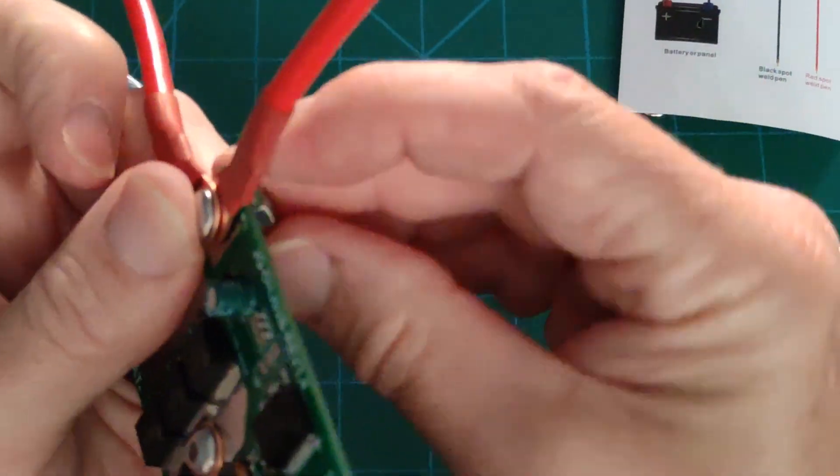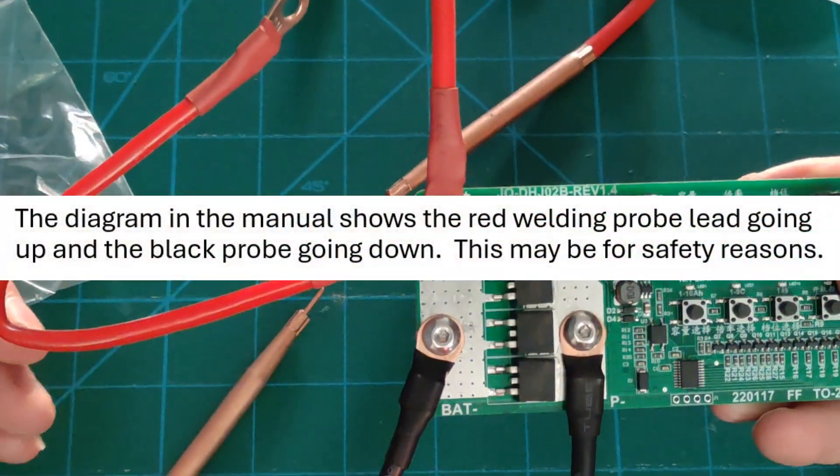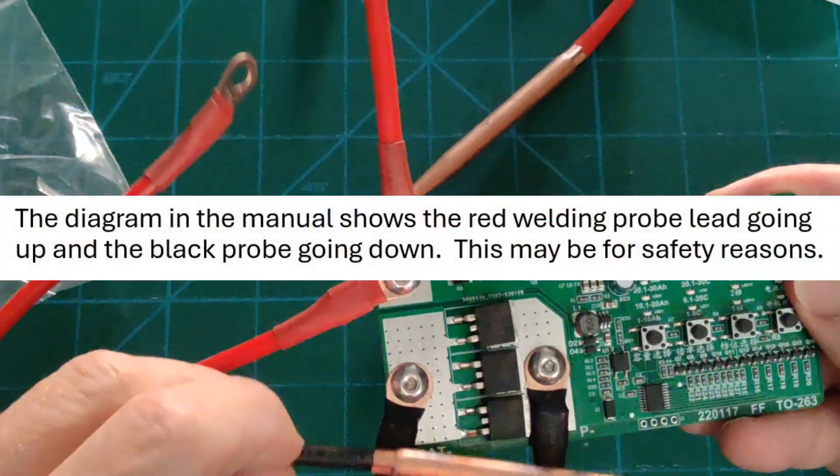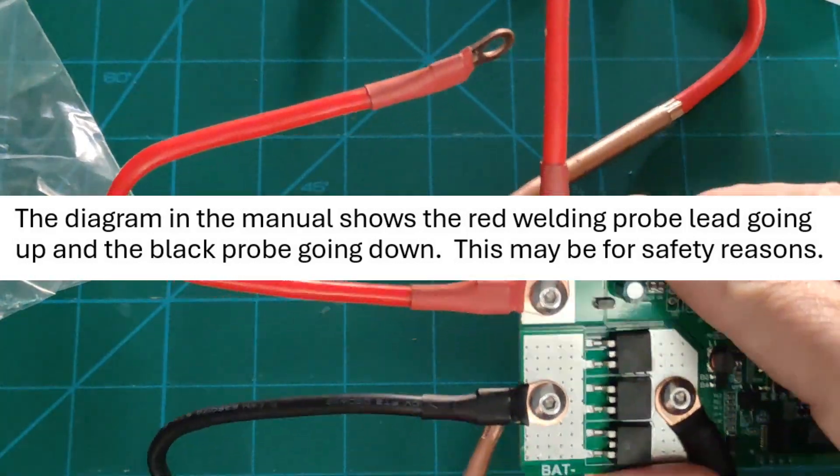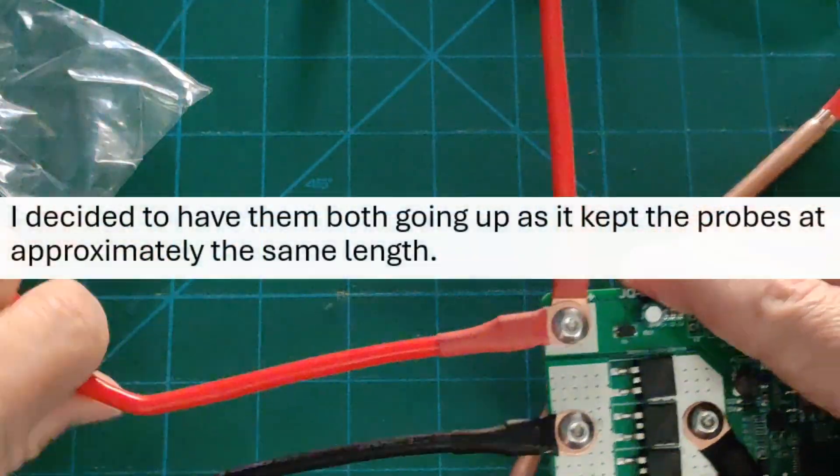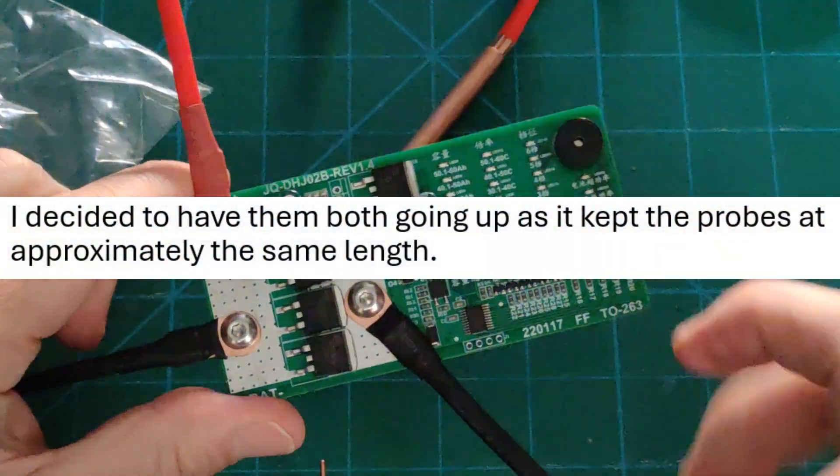Now what's quite interesting here is the angle of those wires. As you can see, the positive probe and the negative probe are actually pointing in opposite directions. So what I'm going to do in a moment or two is just reverse that negative probe. So that the two probes point in the same direction and they're not working against each other.